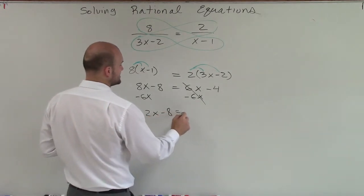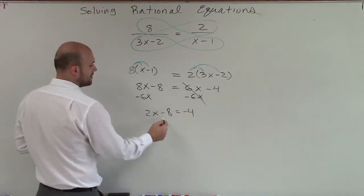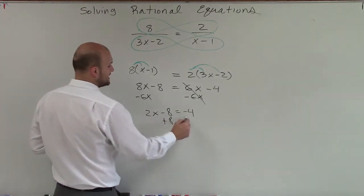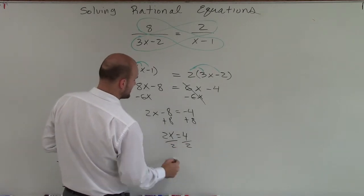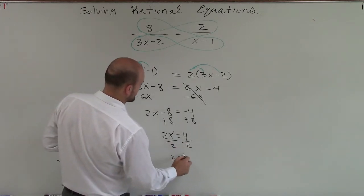Now I'm at a two-step equation, so I'll add 8. 2x equals positive 4, divide by 2, x equals positive 2.